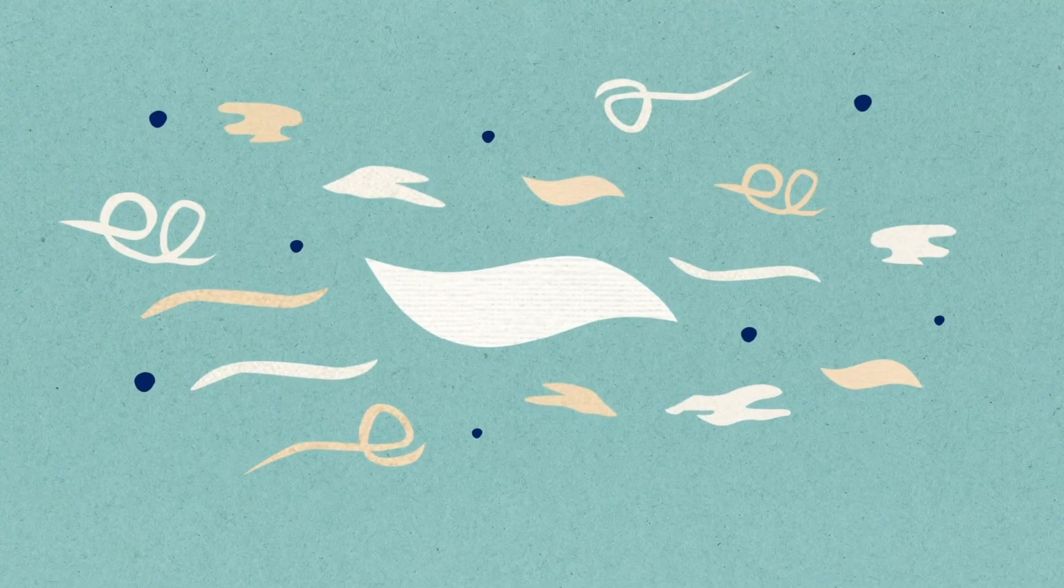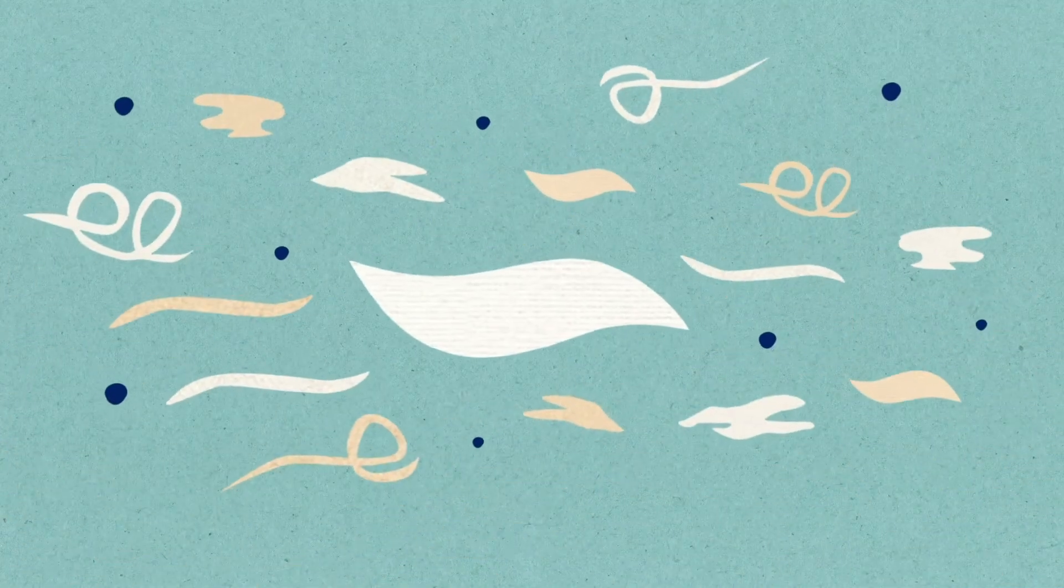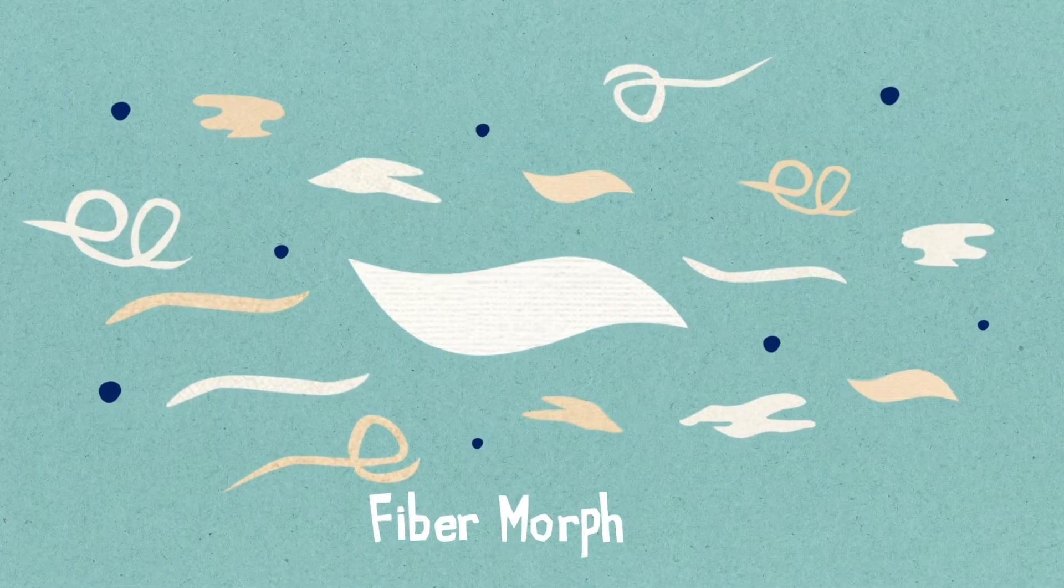Understanding the fiber means knowing what are its properties, such as length, surface, kink, shives content and many other measurable variables. This is known as fiber morphology.